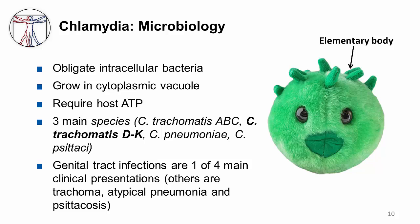They lack the ability to make sufficient energy to grow independently and require host ATP. There are three main species of chlamydia: Chlamydia trachomatis, Chlamydia pneumoniae, and Chlamydia psittaci. Chlamydia trachomatis is the cause of genital tract infections. The others cause trachoma — blindness in many parts of the world including Africa — atypical pneumonia, and psittacosis, which is associated with exposure to parakeets and other birds.